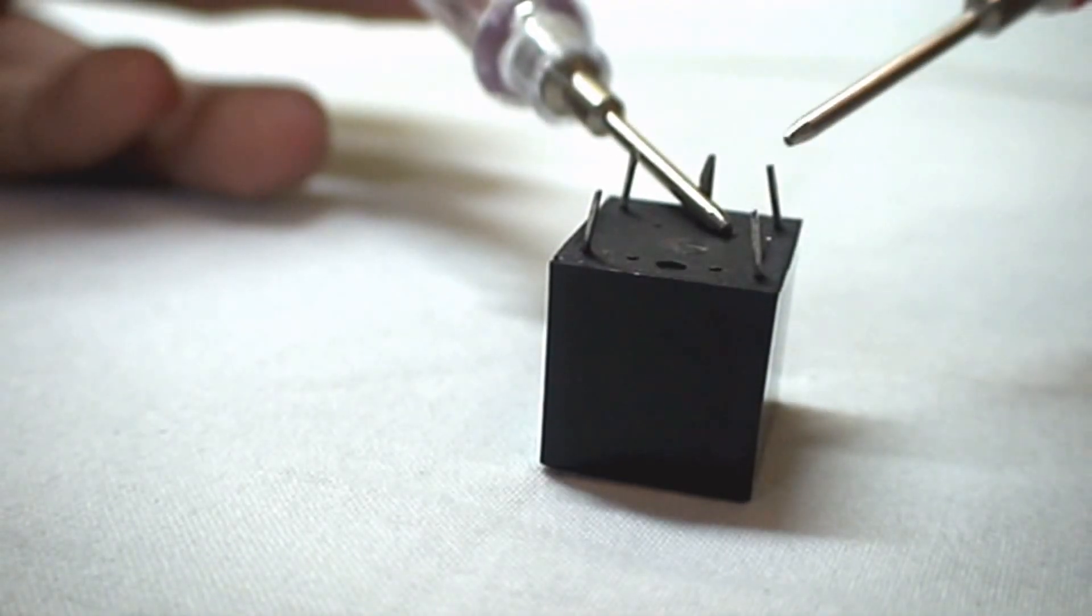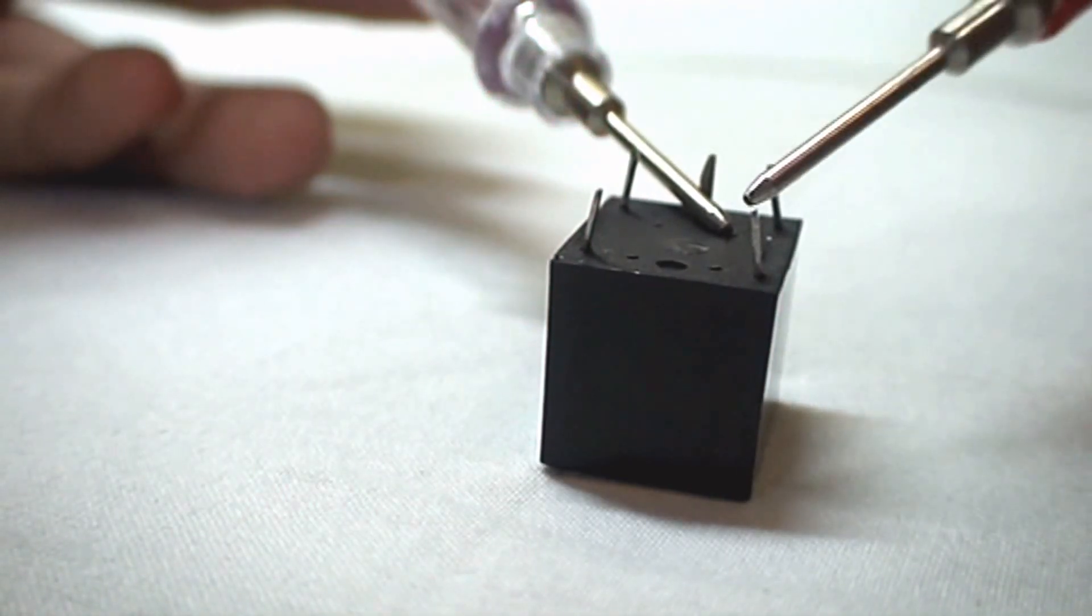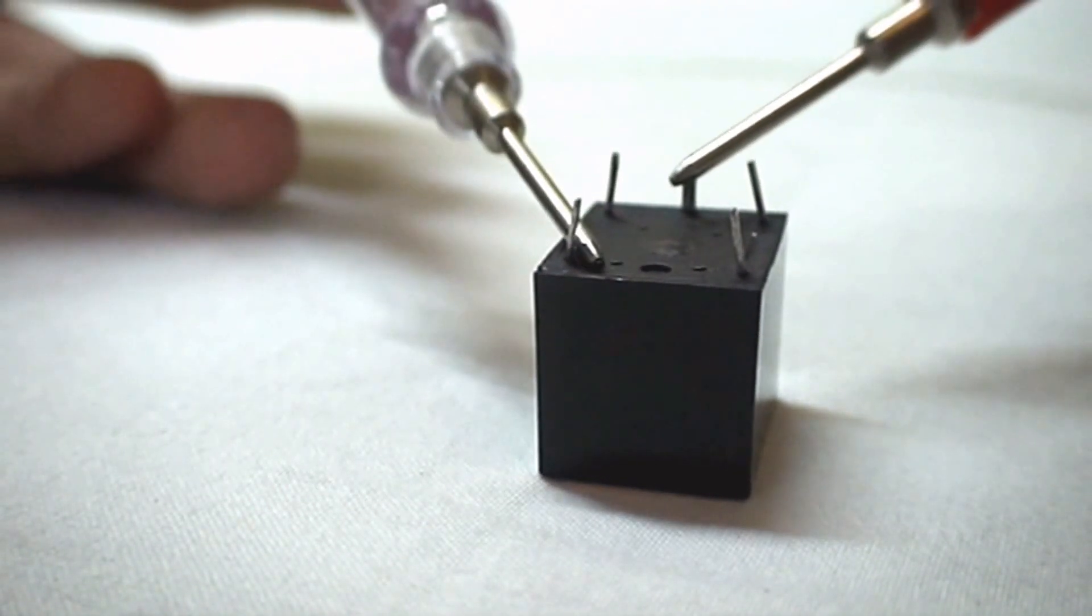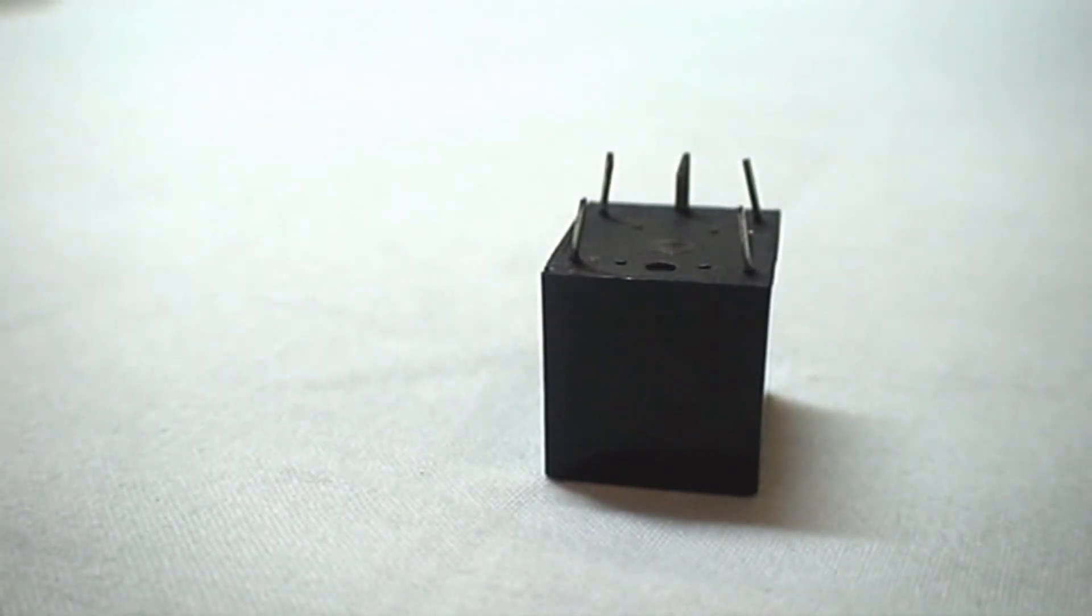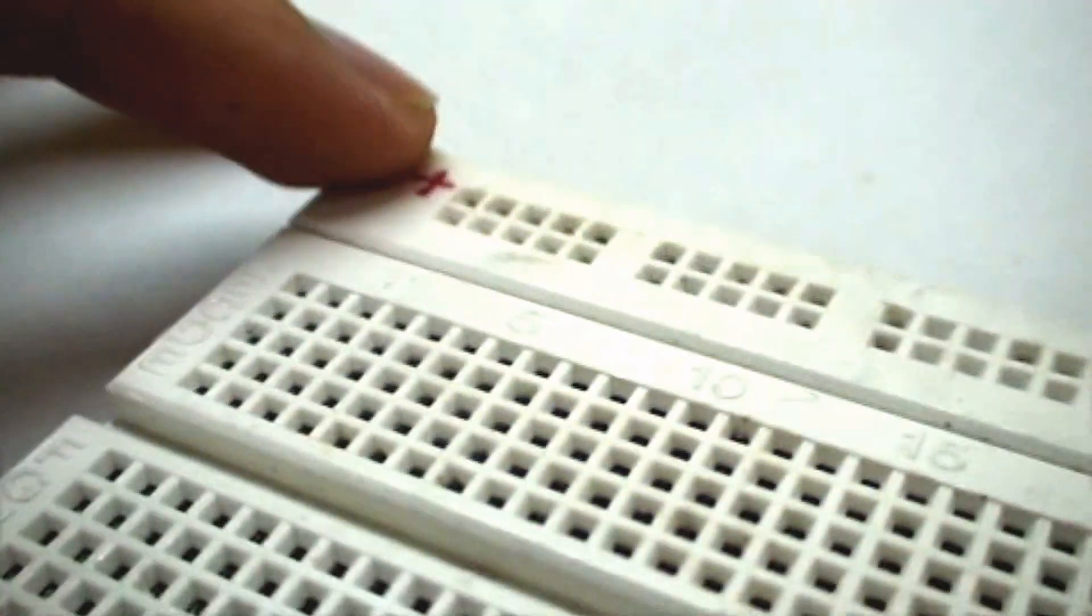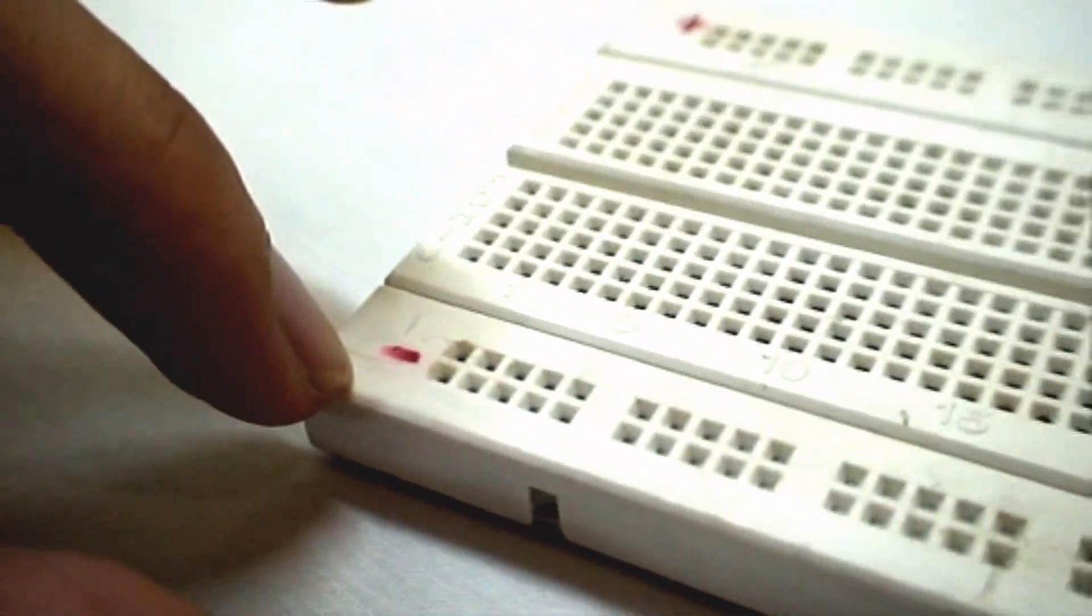When the terminals are powered, these two will get connected, whereas this will get turned off. Next we need the breadboard, where this will be the positive terminal and this is the negative terminal. Now we have the circuit diagram.